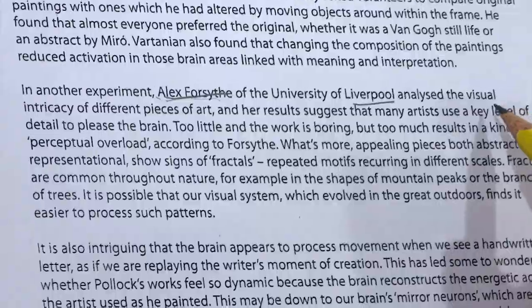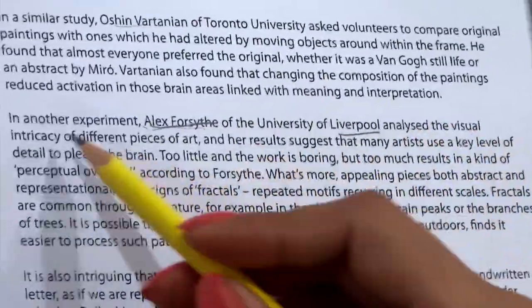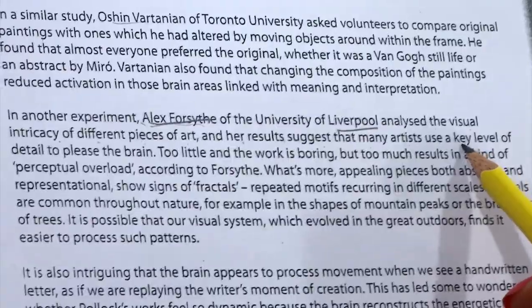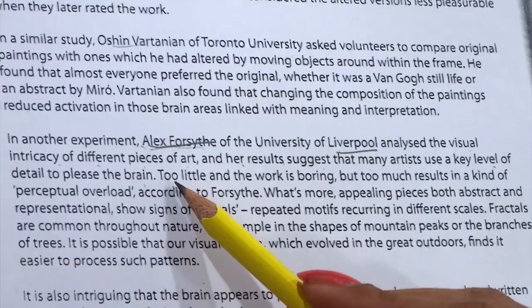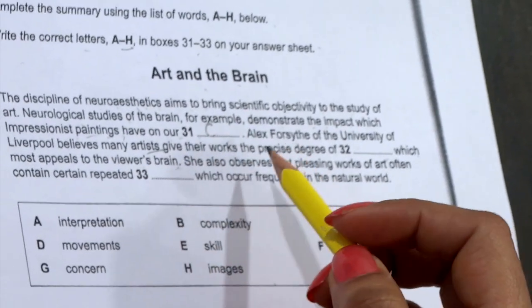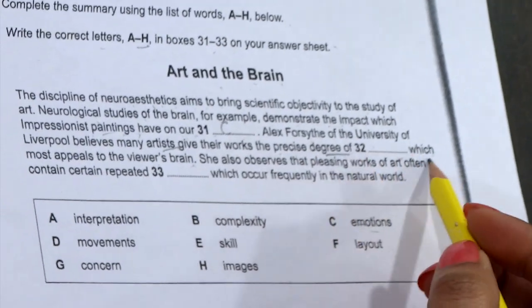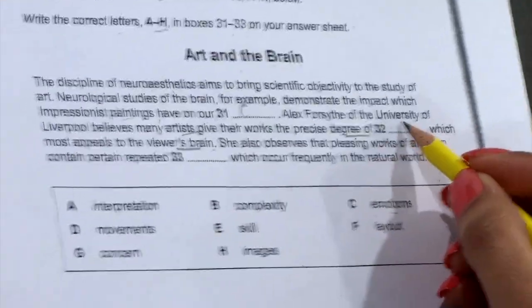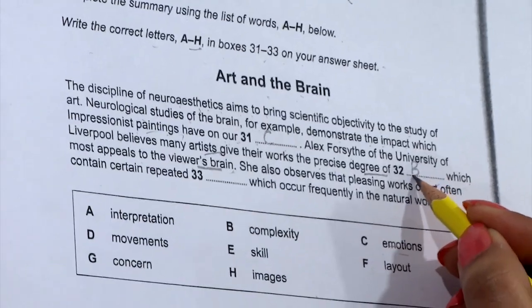Now we are going to read this passage in detail. 'In another experiment, Alex of the University of Liverpool analyzed the visual intricacy of different pieces of art, and her results suggest that many artists use a key level of detail to please the brain.' So they are talking about Alex analyzing the visual intricacy. In the question, Alex believes many artists give their work the precise degree of [gap] which most appeals to the viewer's brain. The degree of intricacy — the synonym for that word is 'complexity'. We can't use interpretation, movements, concern, images, skill, or layout. So the answer is clearly 'complexity', which is the synonym of intricacy.